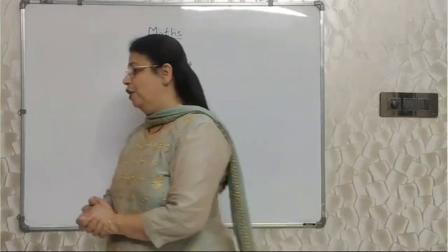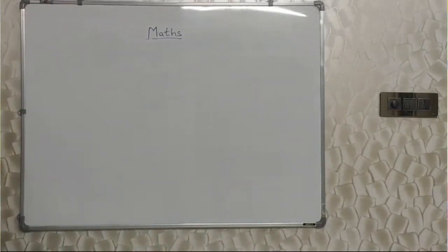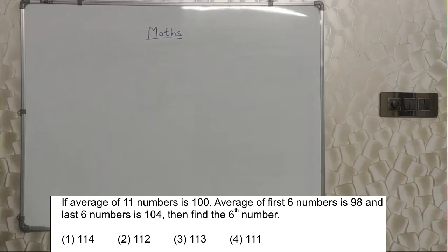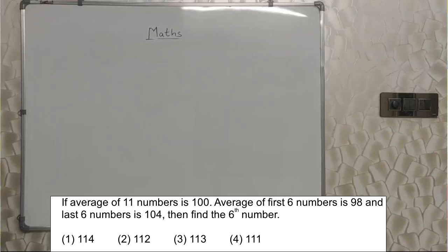The first sum will appear on your screen. If the average of 11 numbers is 100, the average of the first 6 numbers is 98, and the average of the last 6 numbers is 104, then find the 6th number.